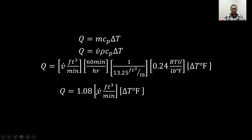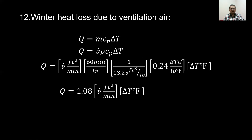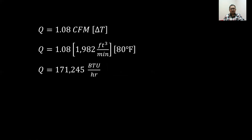We will compute the heat loss from ventilation air using Q equals m times C sub P times delta T, which simplifies to 1.08 times the volume flow rate in CFM times the temperature difference. For winter heat loss due to ventilation air: 1.08 times 1,982 CFM times 80°F equals 171,245 BTU per hour.